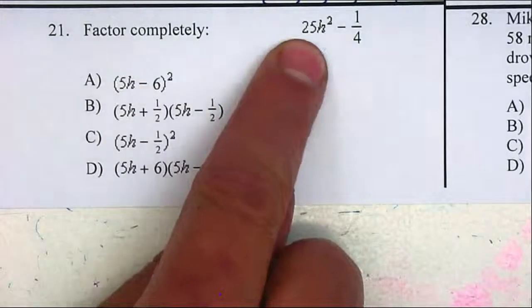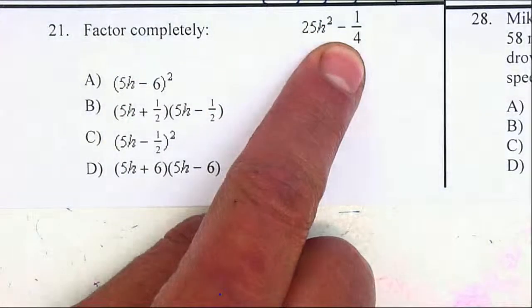Factor completely. We have 25H squared minus 1/4. I need to factor this out.